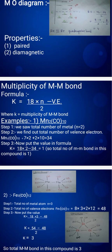Next point is multiplicity of metal-metal bonds. This tells us how many bonds are made between two metals: single bonds, double bonds, triple bonds, or quadruple bonds. The formula is K = (18n - V)/2, where K equals the multiplicity of metal-metal bonds, n equals the total number of metal atoms, and V equals the valence electrons.